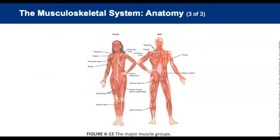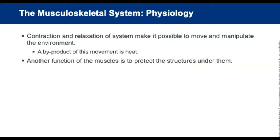This figure shows the major muscles of the human body. Contraction and relaxation of the skeletal muscles make it possible to move and manipulate the environment. A byproduct of muscular contraction is heat — when you get cold, you shiver, which is an involuntary shake of the muscles to produce heat. Another function of muscles is to protect the structures beneath them.